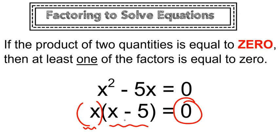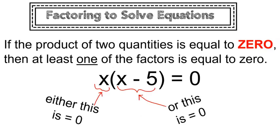And the only way for a product to have an answer of 0 is for one of these factors to actually be equal to 0. So that means either the first factor has to be equal to 0 or the second factor has to be equal to 0.